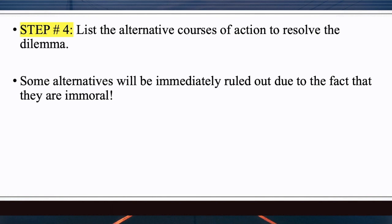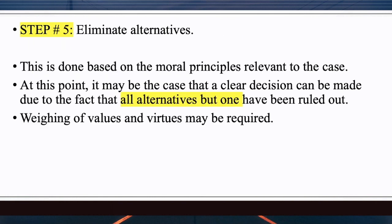Some alternatives will be immediately ruled out — it's like, no, I can't do this one because it's immoral. Step five — eliminate alternatives. This is done based on the moral principles relevant to the case. You want to get it down to all alternatives eliminated but one — the one you want to stick with for your biblical ethic decision making to solve this dilemma.